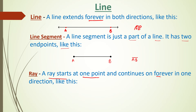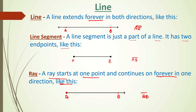Next is a ray. A ray starts at one point and continues on forever in one direction. The starting point of the ray is A and it goes forward in the rightward direction toward point B. A ray can be represented as AB with an arrow.